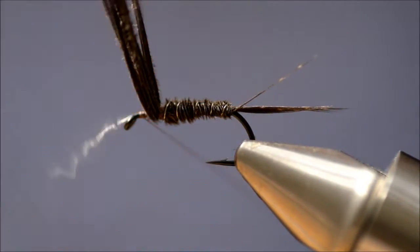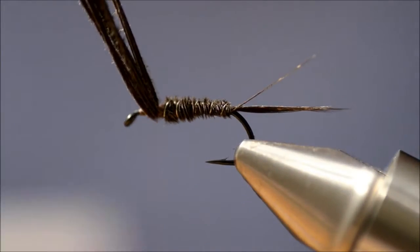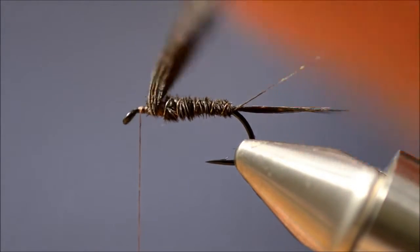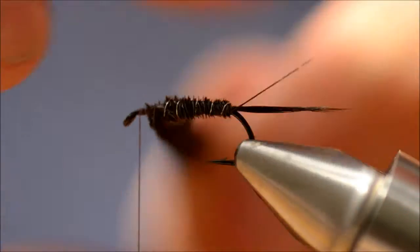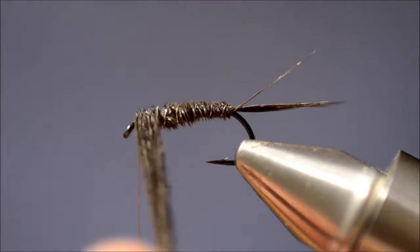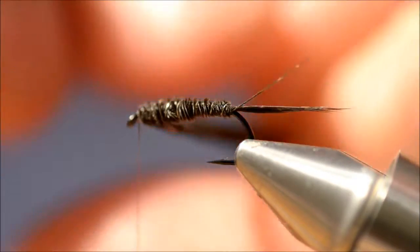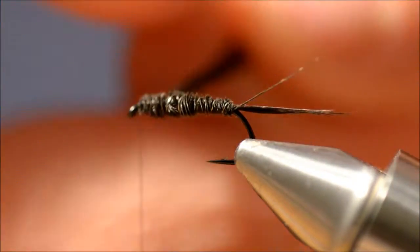Twist until it breaks, and now we are going to build a thorax the other way. Just twist a little bit together.